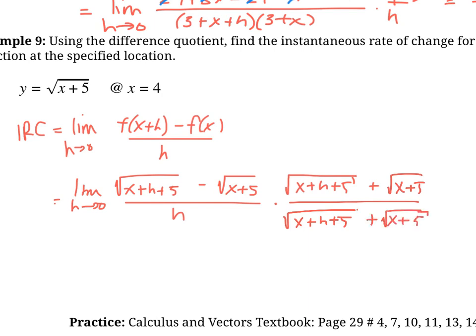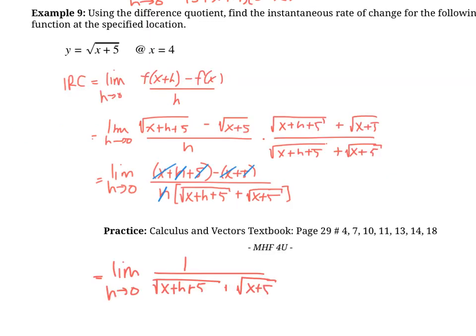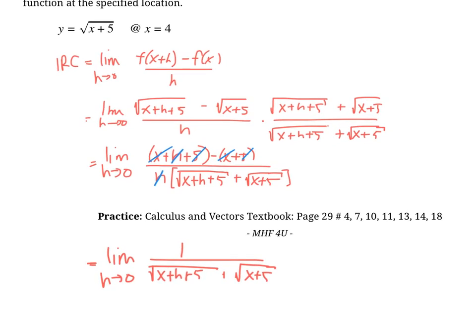Okay, so pause it here again, and see if you can clear that up with a little bit of algebra. So once you've simplified, you should come down to this. Everything cancels out, two h's cancel out, and you're left with this. And now we are allowed to plug in that h is 0 because it won't make it undefined.